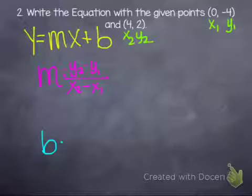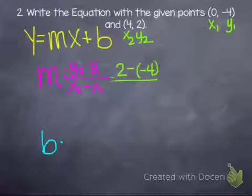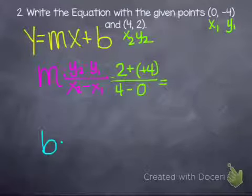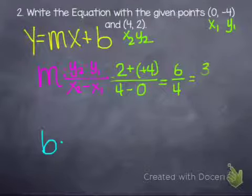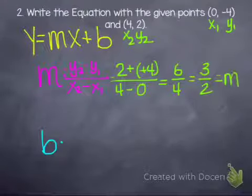So now we just start to plug these in. So our y2 was a value of 2 minus y1, which is negative 4. And that is all over x2, which had a value of 4, minus x1, which was a value of 0. And then we begin to simplify. So 2 minus a negative becomes 2 plus positive, so it becomes 6. 4 minus 0 is 4. Both of these are divisible by 2. So 6 divided by 2 is 3, 4 divided by 2 is 2. So that is our m. m is equal to 3 halves.